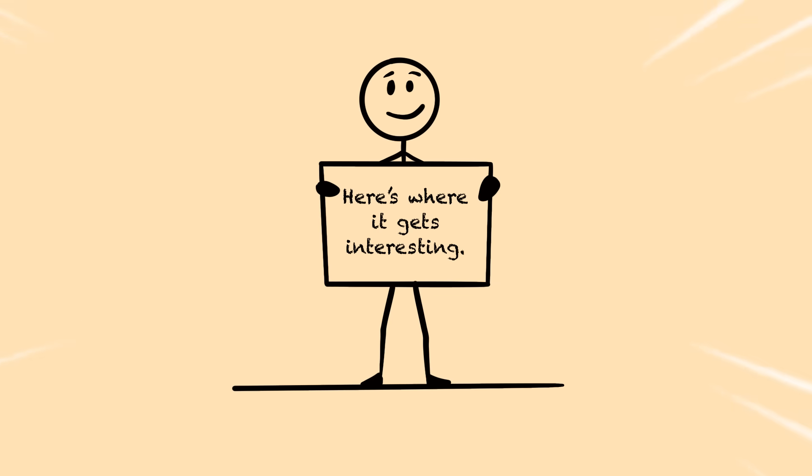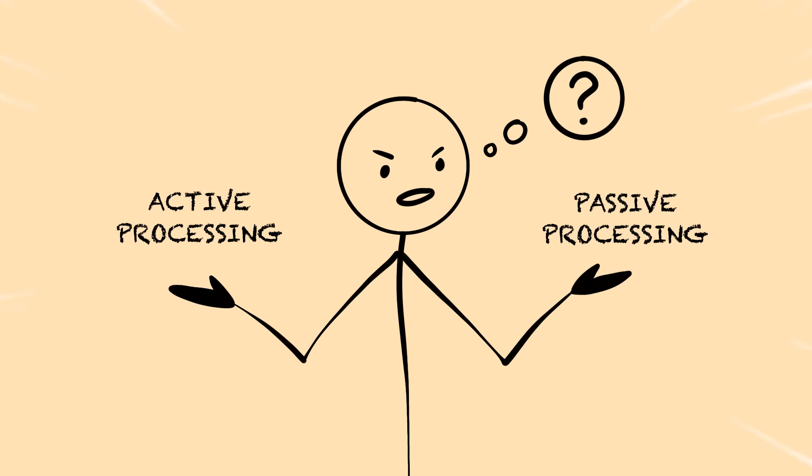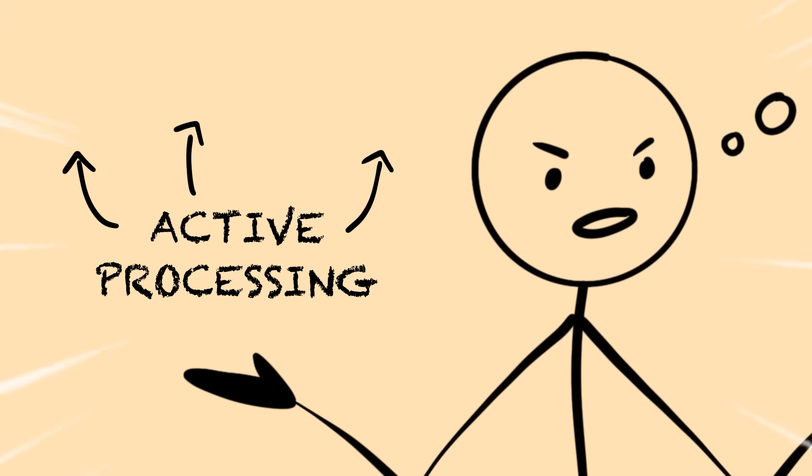Here's where it gets really interesting. Your brain has two main ways of processing experience. Active processing creates clear memories, builds actual neural pathways, and makes time feel real.